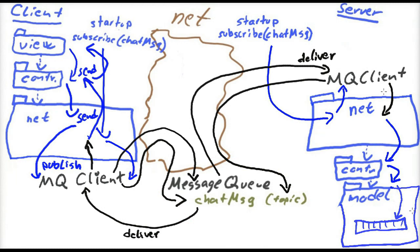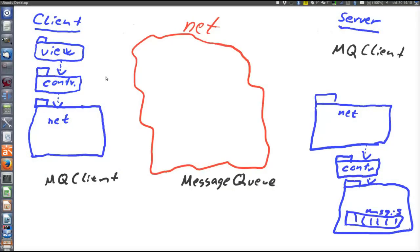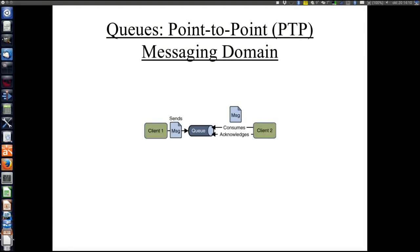Now let's leave the process of publishing a message and instead look at what happens when a new client joins the chat. What we want to achieve is that the new client shall receive the entire conversation up to this point, and of course shall also receive future messages. To understand how this shall be handled we have to understand another messaging domain, which is point-to-point messaging, or queues.